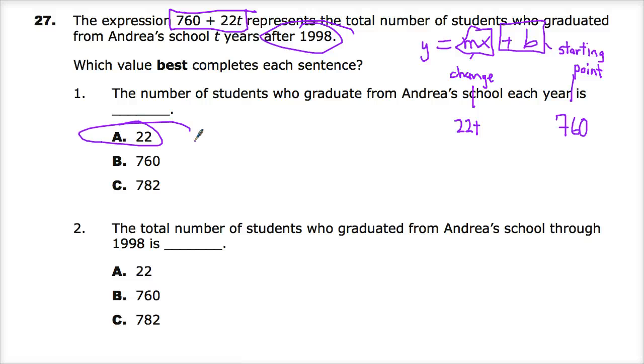For number two, the total number of students who graduated from Andrea's school through 1998. So, in all the existence of her school, which is apparently very small with only 22 people graduating at a time, this was my starting point. We also identified our starting point and the time stamp of 1998. So, number of students at this point, that's where it all began. So, 760 is the total number.